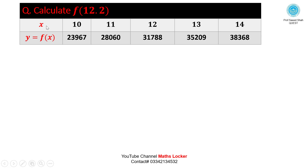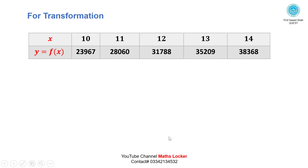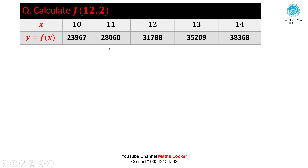Example: Calculate f(12.2) given the table: x = 10, 11, 12, 13, 14 and y = f(x) = 20239.67, 28060, 31788, 35209, 38368. Checking the interval length: 11-10=1, 12-11=1, 13-12=1, 14-13=1, so h=1, equal interval. We want the value near the center because 12.2 is near to the center value 12.